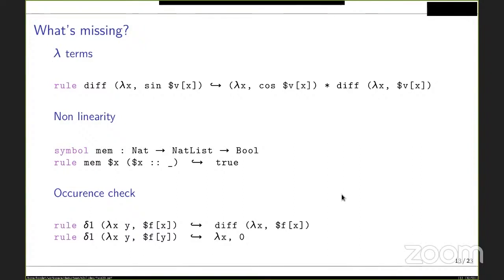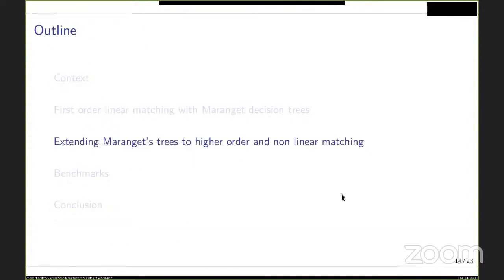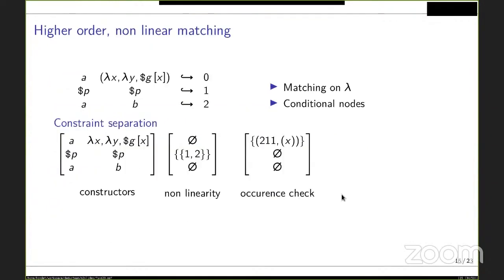The contribution extends Maranger's trees to higher-order non-linear matching. Lambda abstractions are handled just like any other constructor — a lambda symbol is added to the switch-case list and behaves similarly to signature symbols. For occurrence checks and non-linearity conditions, we introduce conditional nodes. Preparatory work separates the rewriting system into three structures: the base system ignoring constraints, positions subject to non-linearity checks, and positions subject to occurrence checks with their allowed variables.